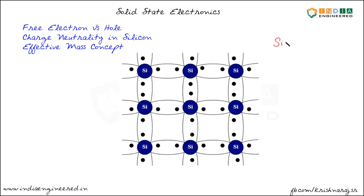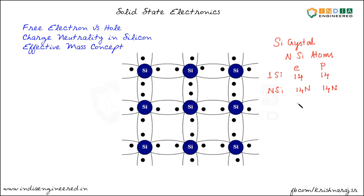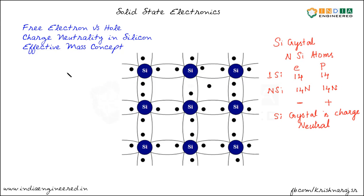Let's consider a silicon crystal having n silicon atoms. In a single silicon atom we have 14 electrons and 14 protons. So in n silicon atoms we will have 14n electrons and 14n protons. The charge of an electron is negative and that of a proton is positive, with equal magnitudes. Therefore the silicon crystal is electrically neutral or charge neutral. The real question is: does the silicon crystal have some charge after the creation of an electron-hole pair?